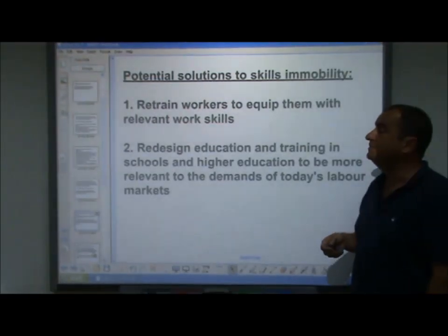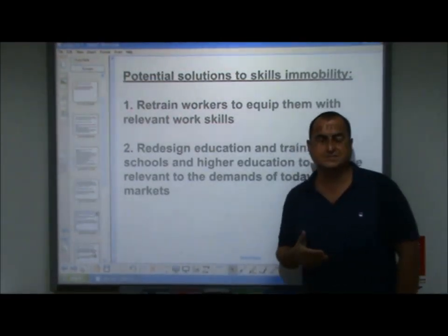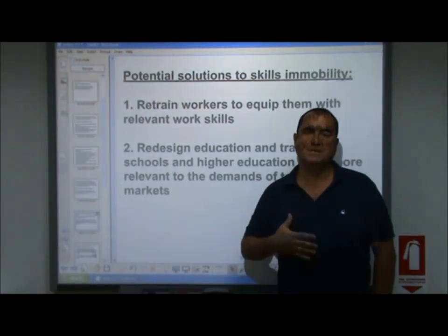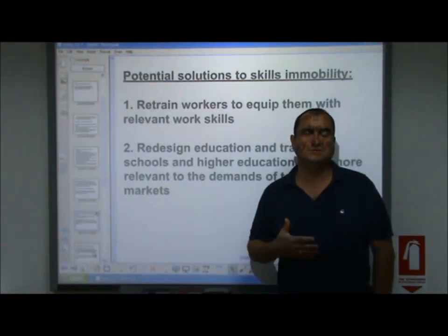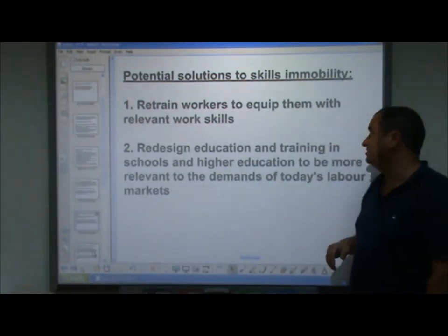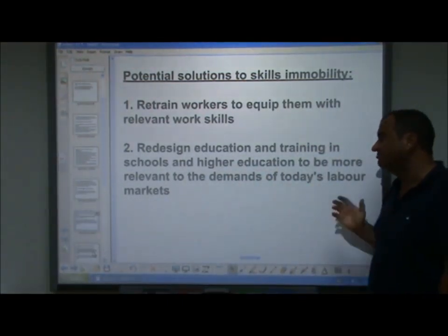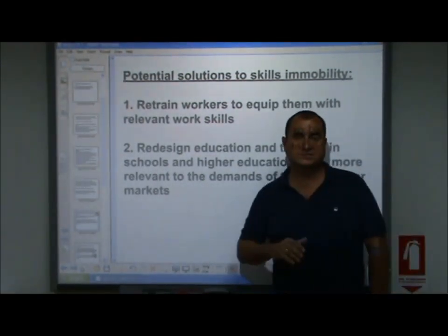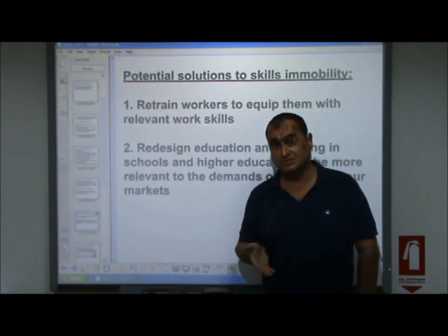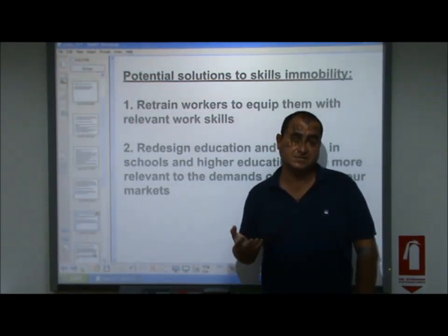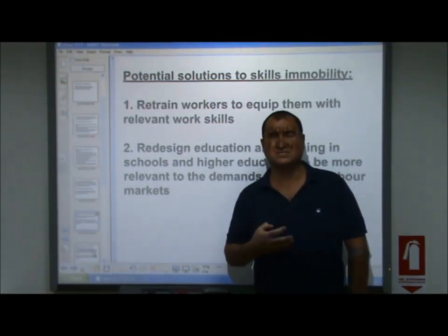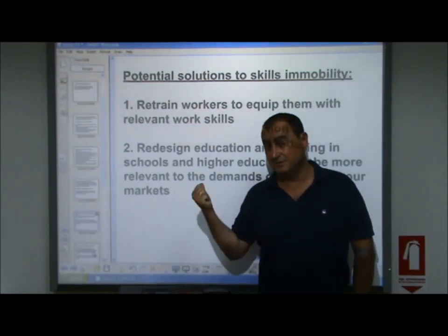Potential solutions to skills immobility include retraining workers to equip them with relevant skills — though that's easier said than done. It's questionable whether people aged 50 or 55 will be retrained in time to get jobs before reaching retirement age. Another solution is to redesign education and training in schools and higher education to be more relevant to the demands of today's labour markets — more vocational training before young people leave education, equipping them with relevant skills for the workplace. Of course, this takes a lot of time, so time lags are a possible evaluation point.